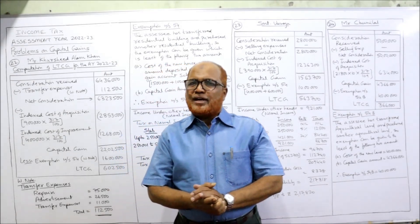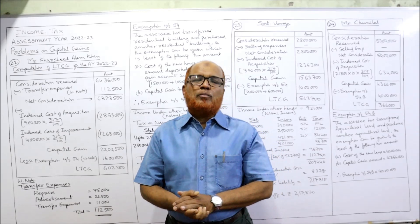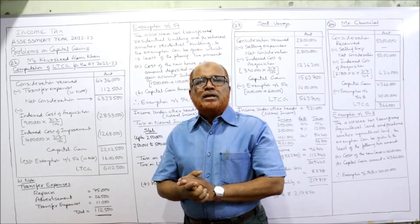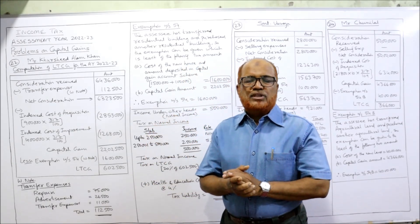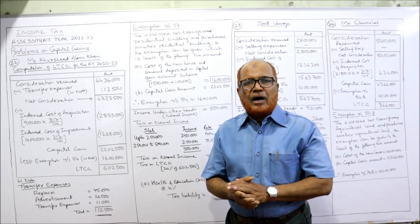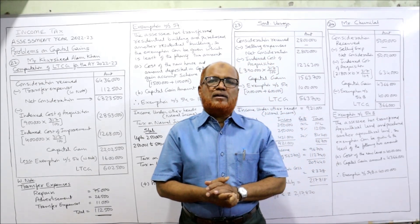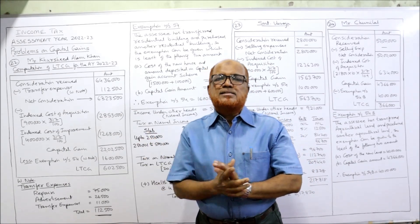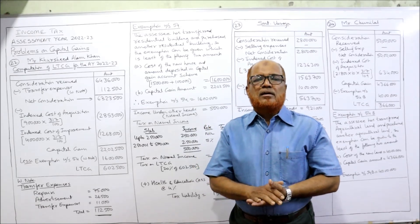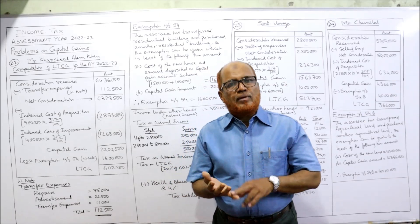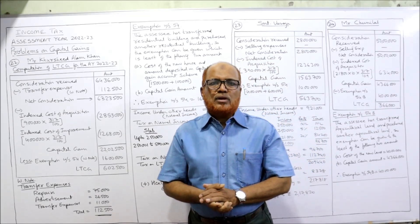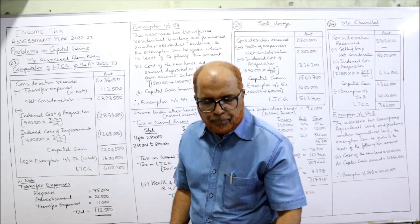Welcome to my channel. I am Hashem Ali Khan. So far 21 problems I have completed on computing the income from capital gain. In this video, three more problems — 22, 23, and 24 — I am going to explain. All the problems are based on the provisions of the Income Tax Act. After doing 21 problems, you should be more confident in solving capital gain problems. Comparatively, the problems of capital gains are much easier if you compare them with income from salary, income from house property, or profits and gains of business or profession. Here, only a few provisions you have to remember.